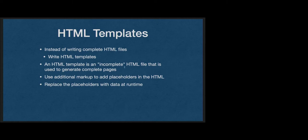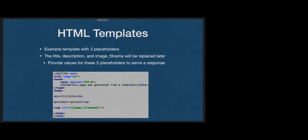Instead of writing one HTML file, we're writing an incomplete file with placeholders of where the content should go — the content that should be dynamic. Homework 2 is all about building a dynamic page. The dynamic content will be just placeholders instead of actual HTML. And then when a user requests that HTML, we're going to read the template, replace all the placeholders with the actual data we want to send, and ship it to the user.